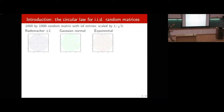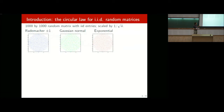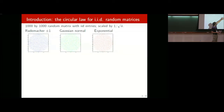This will look a little familiar for those of you who have seen other talks in this conference. I'm going to talk about the circular law. What we see here are eigenvalues of three matrices. Each is a thousand by thousand matrix with IID entries scaled by one over root n. The first is Rademacher plus-minus one, so all entries are plus one or minus one with probability one-half.